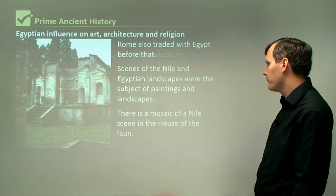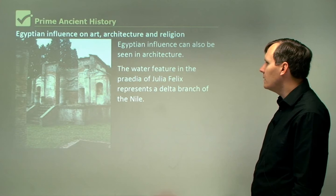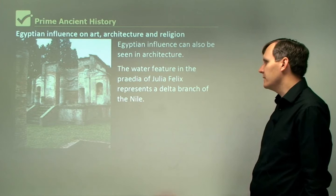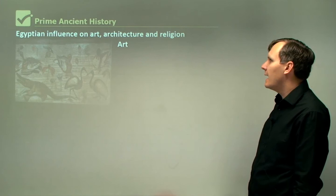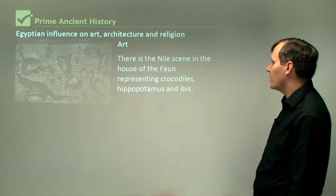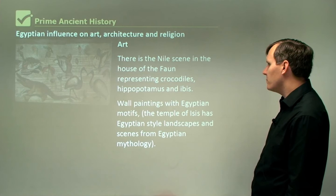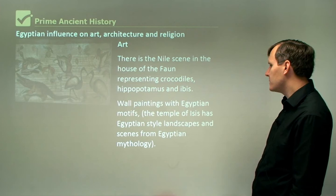Egyptian influence can also be seen in architecture. The water feature in the Praedia of Julia Felix, or the House of Julia Felix, represents a delta branch of the Nile. In art, there is the Nile scene in the House of the Fawn representing crocodiles, hippopotamus, and ibis, as well as wall paintings with Egyptian motifs. The Temple of Isis also has Egyptian style landscapes and scenes from Egyptian mythology.